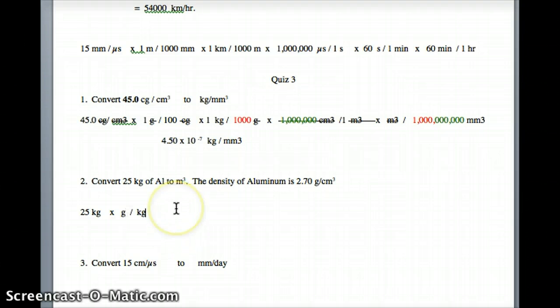Then we're going to go ahead and convert. We need to get cubic centimeters, so we're going to put grams on the bottom and put cubic centimeters on top. Then at this point we've canceled grams. You can see them go away.